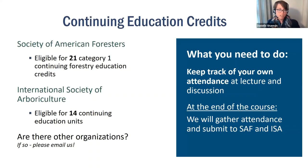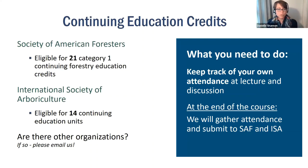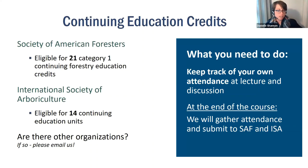Regarding continuing education credits: we have applied and are eligible for several different credits. At the end of the course you can choose if you'd like SAF credits or ISA credits. If there are other organizations you belong to that you'd like us to apply for credit, we'd be happy to do that — just send Maria or me a note. It's going to be on you to keep track of your attendance, and we'll make sure you get those credits and a certificate at the end of the course.